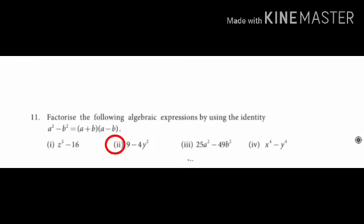Subdivision 2 is homework for you: 9 minus 4y squared. This can be written as 3 squared minus 2y squared — try this sum using the same method.